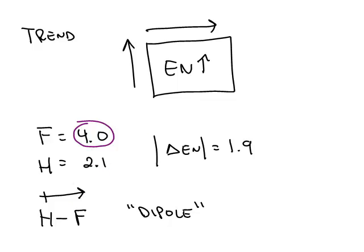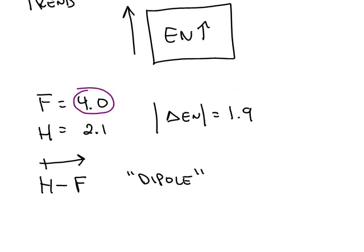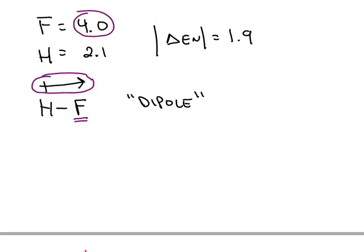The more electronegative means the electrons spend more time close to the fluorine. And so we can show this by writing a positive sign with the arrow extending towards the negative part. So in other words, we have two electrons between the hydrogen and the fluorine.